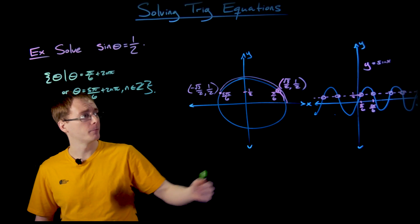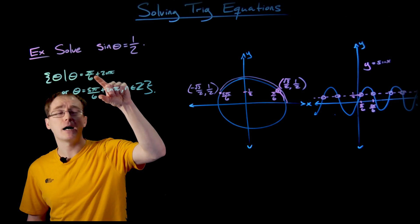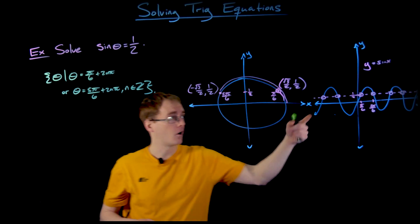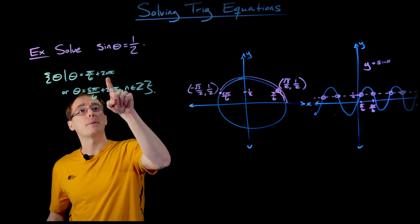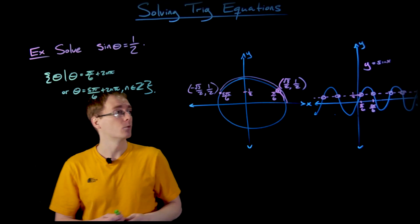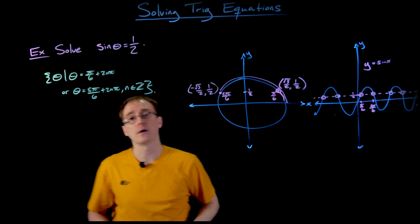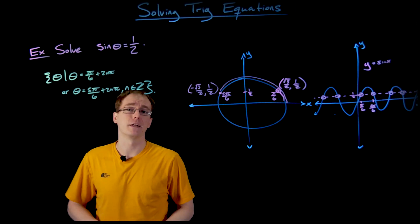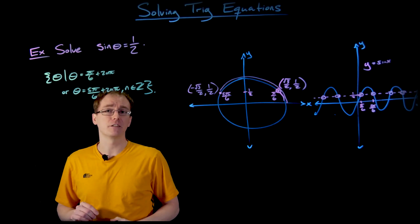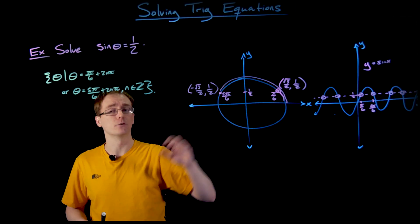This formula comes from the graphs of our sine function and the unit circle. π/6 and 5π/6 are the first solutions we get in the first period on the graph or around our unit circle. By adding different multiples of 2π to these initial values, we're either taking an additional trip around the unit circle or traveling to the next period left or right, depending on whether n is positive or negative. This short statement is actually describing all the infinitely many solutions inside our solution set.